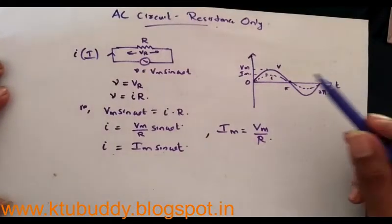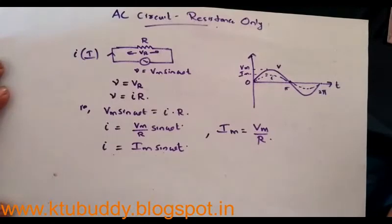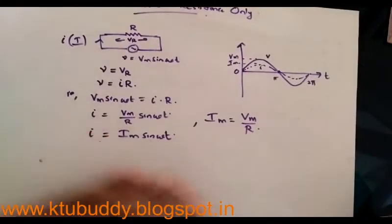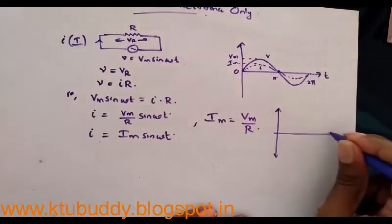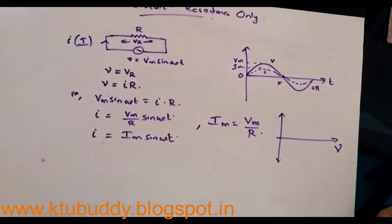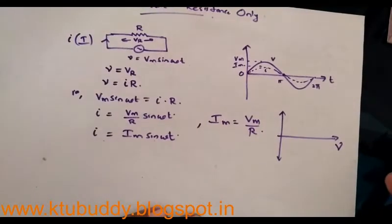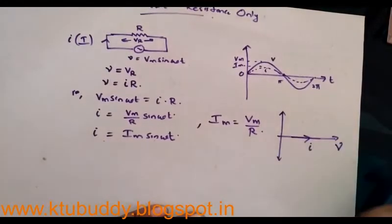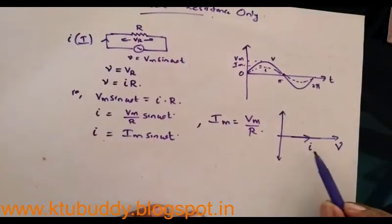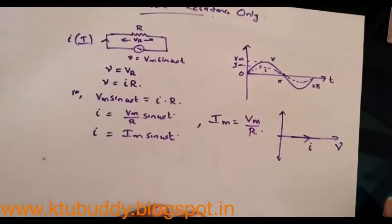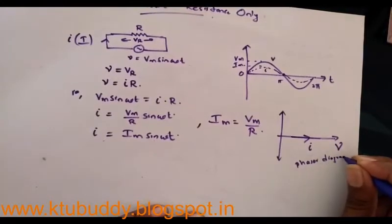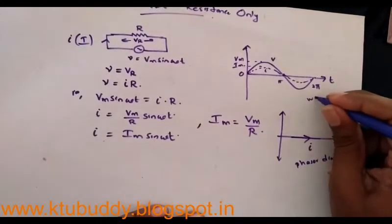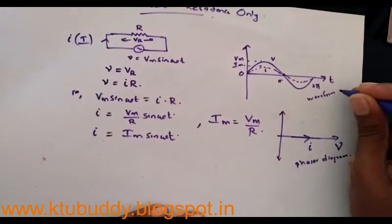I can also draw a phasor diagram for a purely resistive circuit. Taking voltage as the reference phasor, since voltage and current are in the same phase, the current phasor is drawn along the same line as the voltage phasor. The phase difference between voltage and current is zero. This is the phasor diagram of a purely resistive circuit.